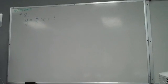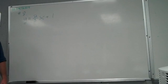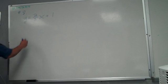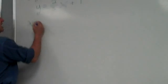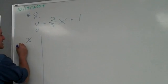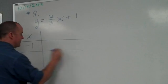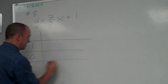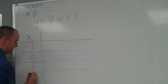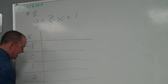Okay, number eight, y equals two-thirds x plus one. The only work I will accept on this, I said, is a table of these exact five x values. Negative one, zero, one, two, and three.